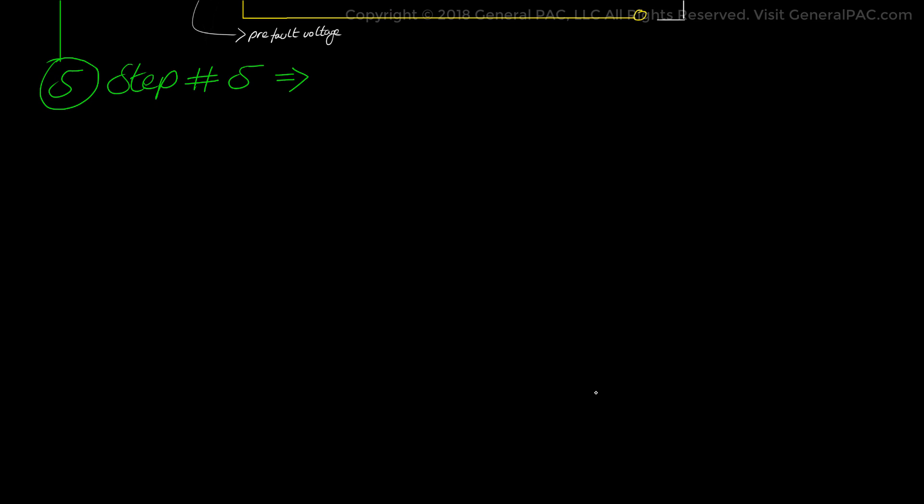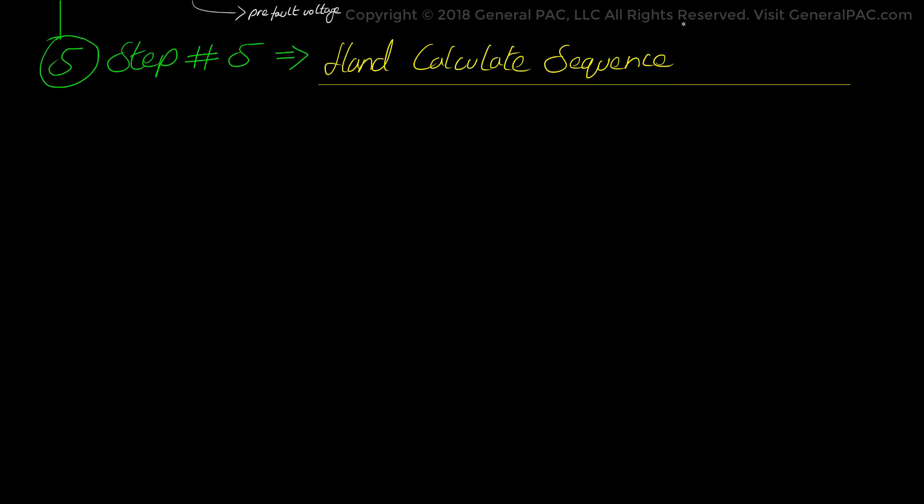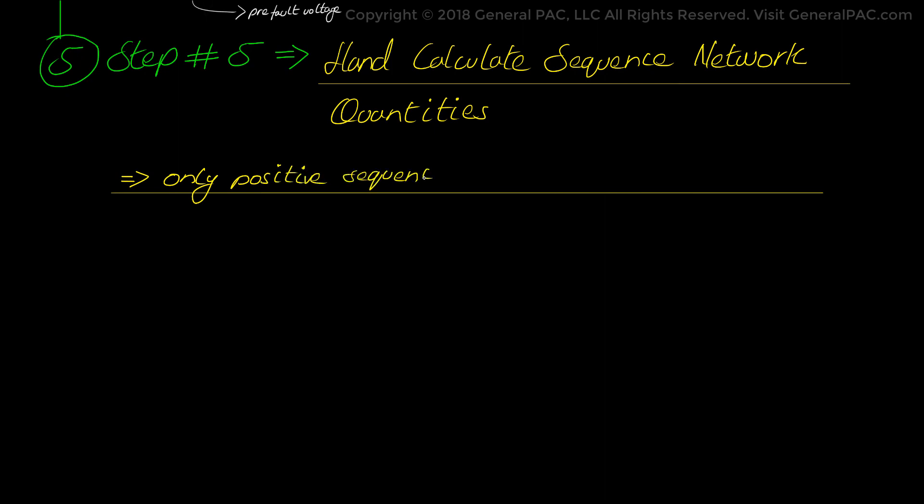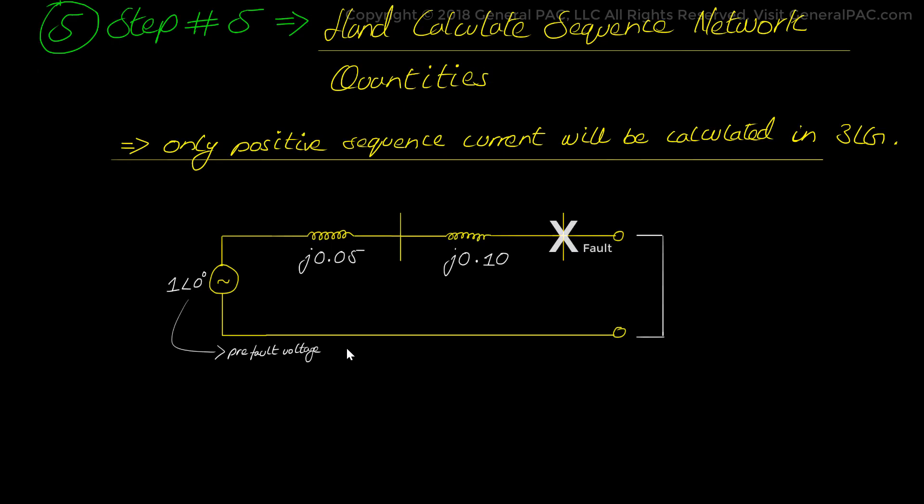Now towards step 5 we will hand calculate the sequence network quantities. Since we have a perfectly balanced 3-line to ground fault, only positive sequence fault current will be calculated from this faulted network. So as we analyze the faulted sequence network diagram, it's clear that we simply need to divide the source voltage in per unit values to the total positive sequence impedance which is also in per unit values. The source voltage here is 1 per unit and the sum of the series impedance becomes 0.05 plus 0.1 to be j0.15 per unit.